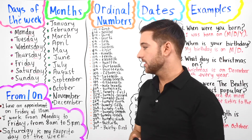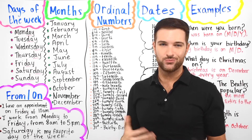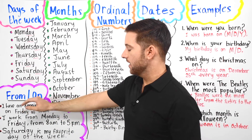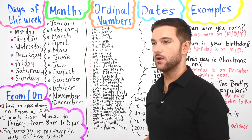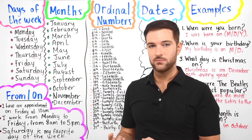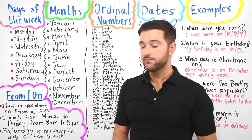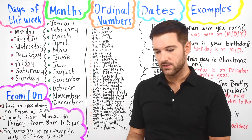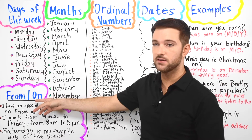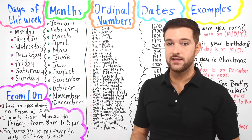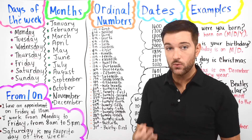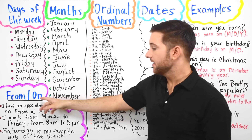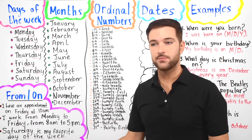When we talk about the days of the week, English speakers use two key words: 'from' and 'on.' We use 'from' to show a point in time when something begins or starts. And we use the word 'on' to specify when something happens — on what specific day of the week did it happen.